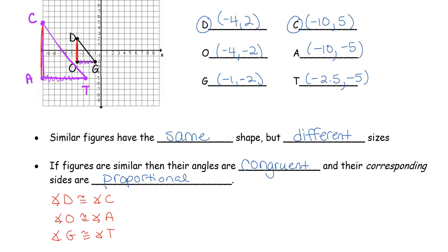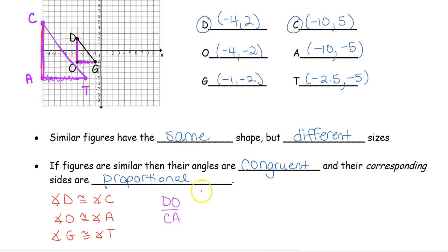Now we have corresponding proportional sides. Instead of the sides being congruent, I'm going to write a ratio. DO is in the same spot as CA, so those two corresponding sides DO and CA are written as a ratio. My next two sides: OG is in the same spot as AT, so OG over AT. When you write your proportions, be consistent — since I put DO on top for the first ratio, I have to put OG on top as well, coming from triangle DOG to triangle CAT.